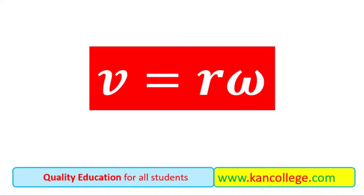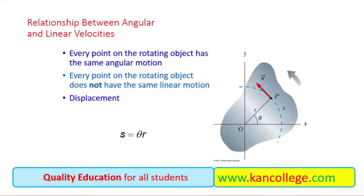In this lecture, we discuss the relationship between linear velocity and angular velocity. We want to prove the formula that V is equal to R omega — that is, we want to establish the relationship between angular velocity and linear velocity.